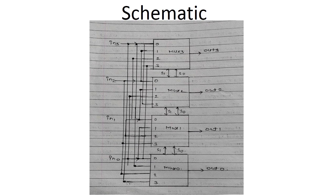Next, when the input combination is 0,1, now it gets shifted. Line number 1 will be activated, and you can see line number 1 is connected with IN2. So IN2 will be connected here and that will be our output O3, meaning OUT3 is connected with IN2. Similarly output O2 will be connected with IN1, output O1 will be connected with IN0, and output O0 is connected with IN3 as visible here. So depending upon the select line combination, the 4-bit left shift operation can be performed quite effectively. This is the working principle of the 4-bit barrel shifter.